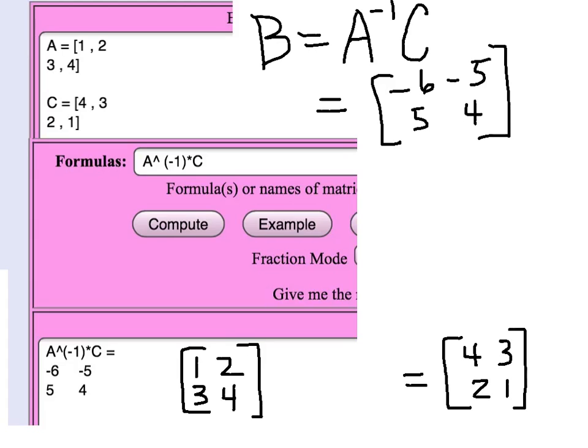And we think we have the answer now. B is minus 6, minus 5, 5, 4. So let's do a quick check.